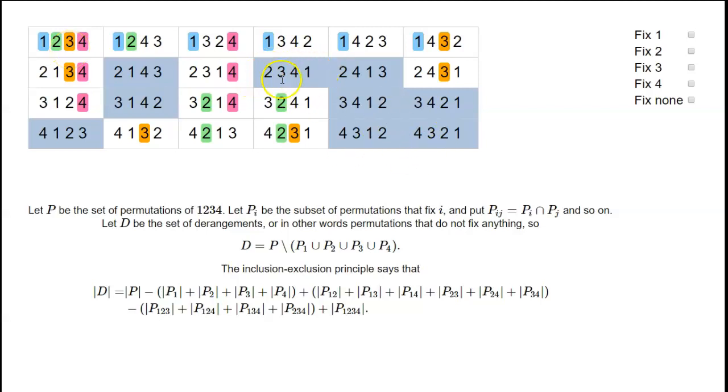For example, we have in this box here the permutation 2, 3, 4, 1. That refers to the permutation that sends 1 to 2, 2 to 3, 3 to 4, and 4 to 1.